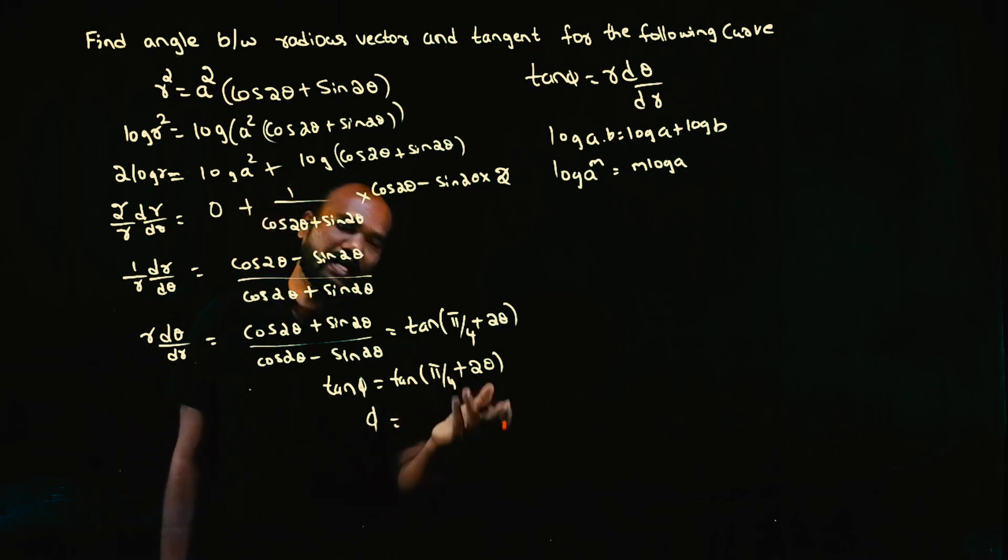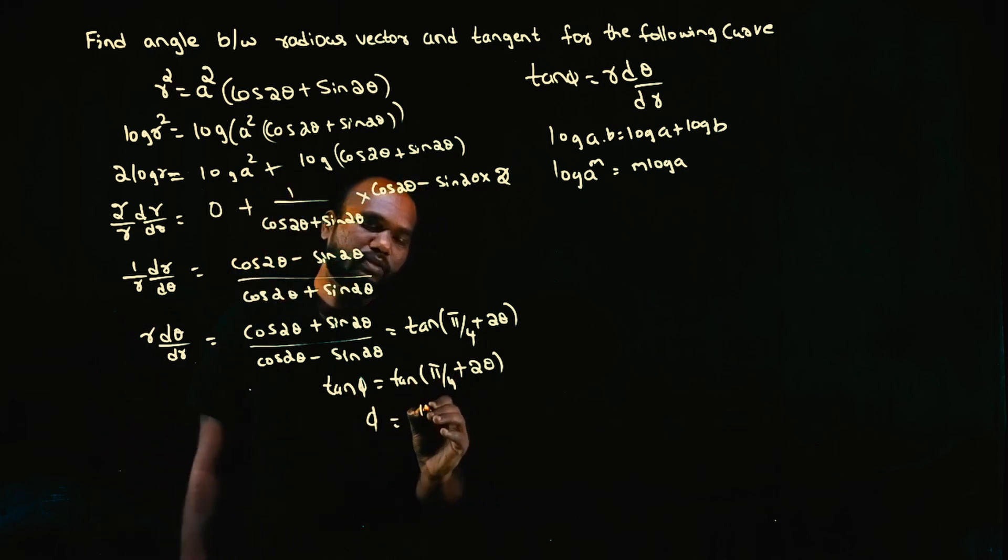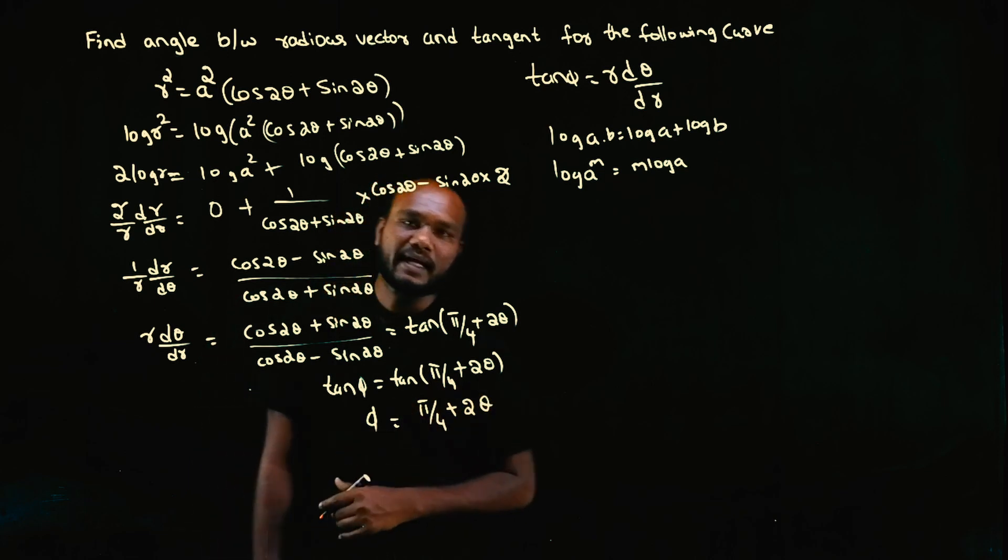Taking tan inverse, tan inverse of tan becomes the angle: φ = π/4 + 2θ. This is the angle between the radius vector and tangent.